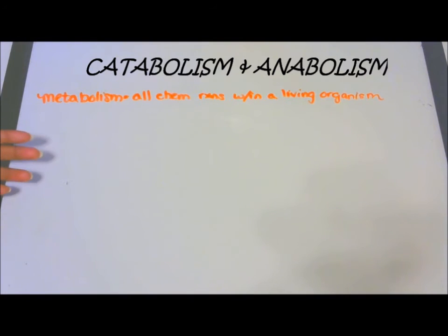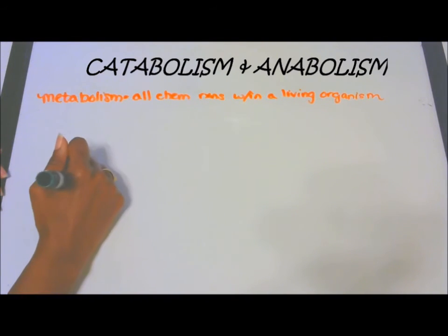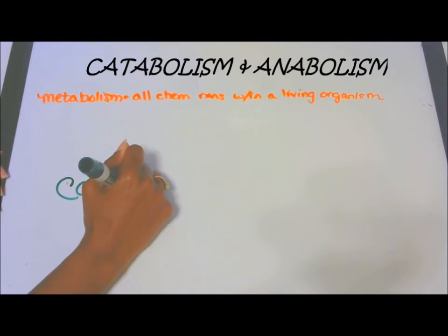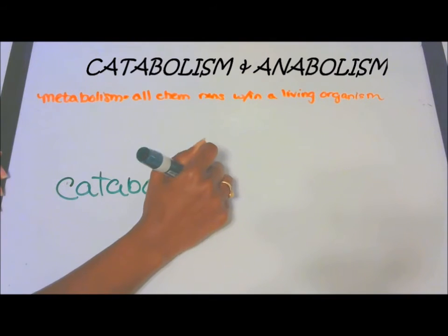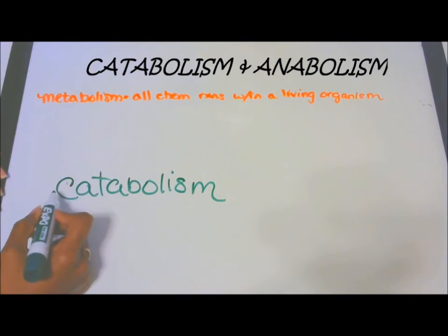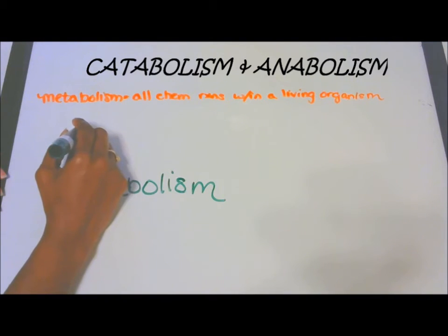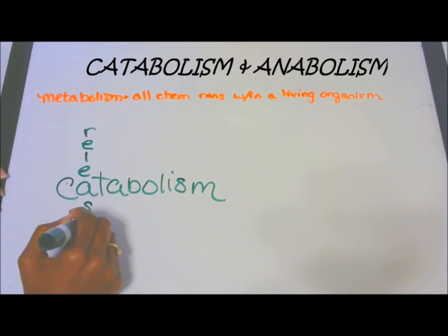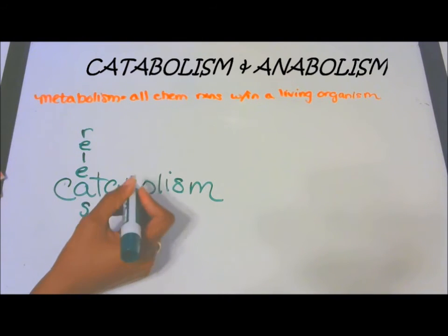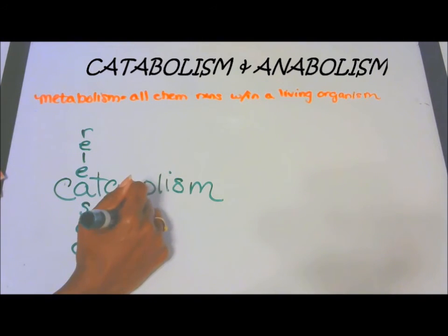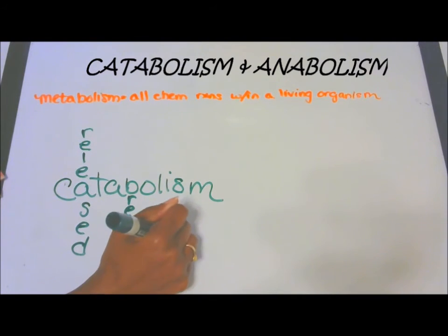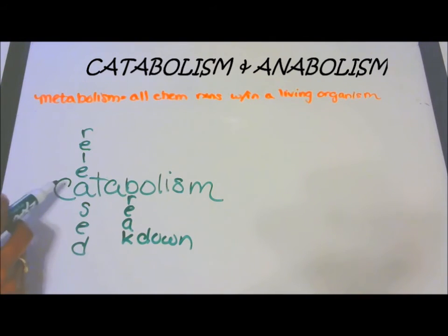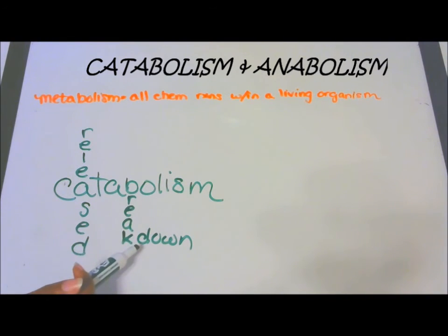So what's an easy way to remember catabolism and anabolism? For catabolism, use the letters C-A-B: with the A, think 'release,' and with the B, think 'breakdown.' Because in catabolism there is a release of energy, and a breakdown of the complex molecule into simpler molecules.